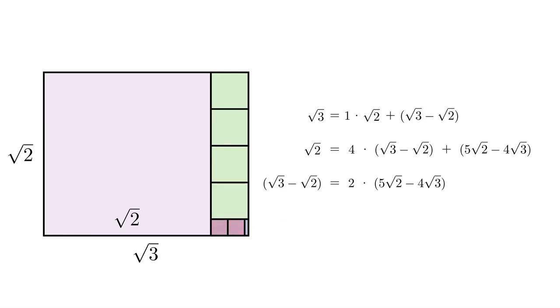And that very narrow piece corresponds to the remainder of nine root three minus eleven root two. And because that piece was so narrow, that remainder is very small.